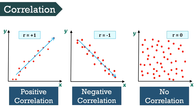No correlation: Two variables are said to be uncorrelated when the change in one variable does not lead to any change in another variable in a certain direction. For example: age and intelligence, weight and energy, etc.